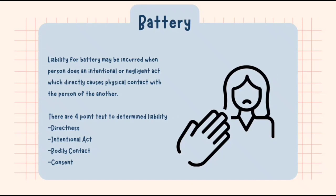The next one is battery. Liability for battery may be incurred when a person does an intentional or negligent act which directly causes physical contact with the person of another. Unlike assault, there must be actual physical contact before there can be liability for battery. For example, beating up a person and stroking her hair without her consent. There are four point tests to determine liability: directness, intentional act, bodily contact, and consent.